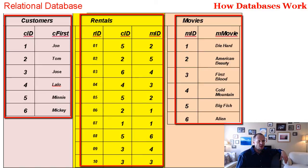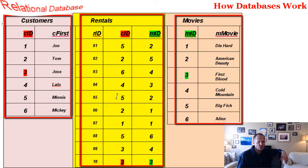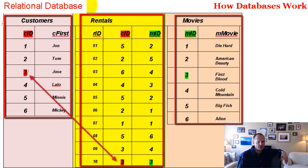So who's the last person to rent First Blood? We notice there's something called movie ID here, and movie ID appears in the rentals table as well. There's a common field in each of these tables. First Blood has movie ID three. If we look for the last rental transaction with a movie ID of three, we see it's the very last one. That transaction was rented by somebody with a customer ID of three. We look at the customers table and the customer with ID three is Jose.